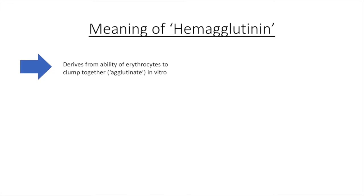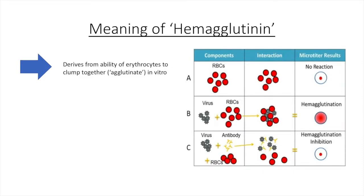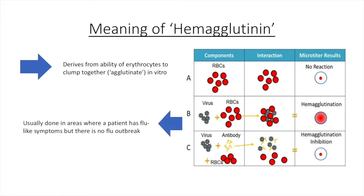The name hemagglutinin comes from the protein's ability to cause red blood cells to clump together, or agglutinate, in vitro. An influenza blood test can be performed by drawing blood and checking for clumping of erythrocytes. If influenza is present, the cells will clump together. If there is no virus or if antibody is present, clumping of cells will not occur. This test is not standard procedure for diagnosing influenza, but it is helpful when a patient has flu-like symptoms and there is no flu outbreak in the area.